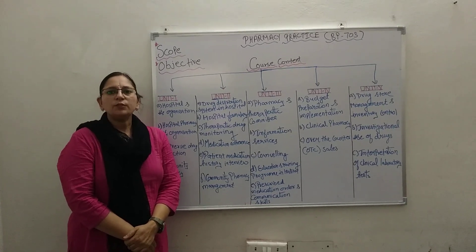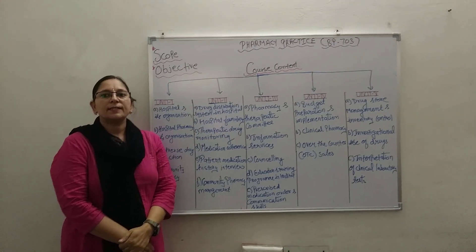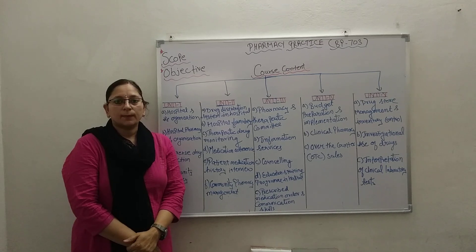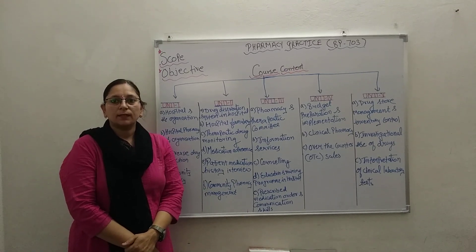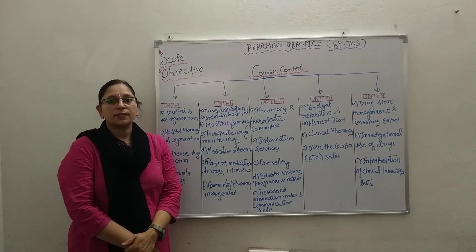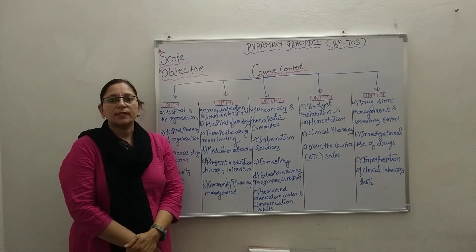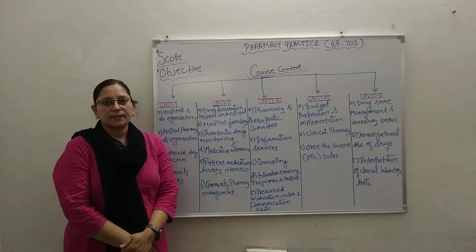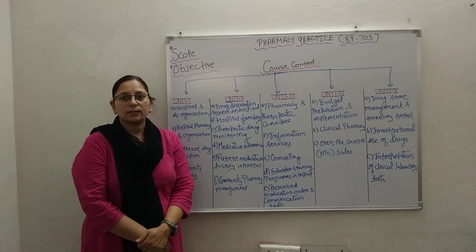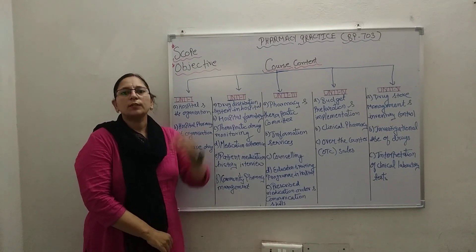The whole subject is divided into three parts: scope, objective, and course content. First of all, let us see what is the scope of pharmacy practice. The scope consists of two parts: Hospital Pharmacy and Community Pharmacy. In Hospital Pharmacy, students are required to learn various skills like drug distribution, drug information, and therapeutic monitoring for improved patient care. In Community Pharmacy, students will be learning skills such as dispensing of drugs, responding to minor ailments, self-medication advice, and patient counseling for improved patient care in the community.